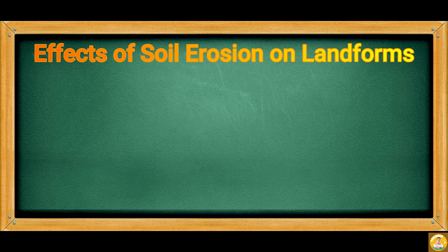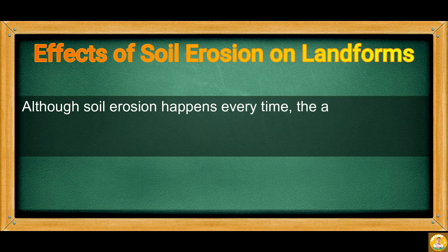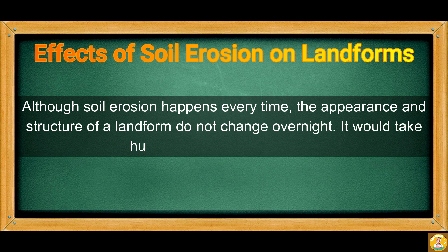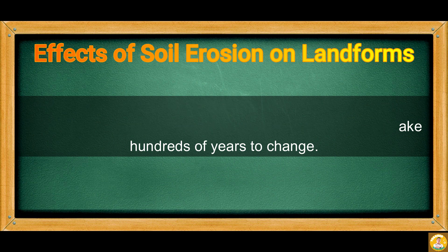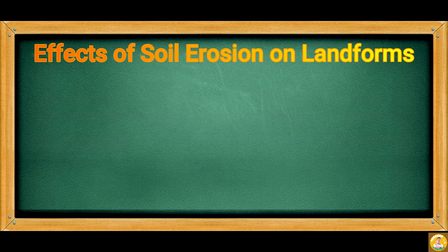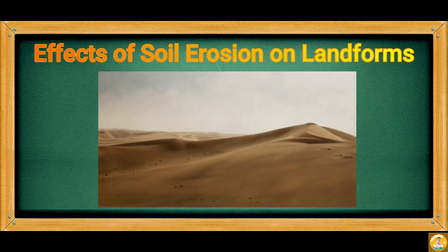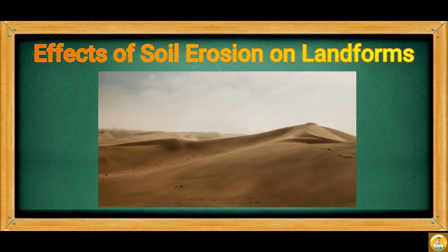Effects of soil erosion on landforms: although soil erosion happens continuously, the appearance and structure of a landform do not change overnight — it would take hundreds of years to change. For instance, sand dunes would form after plenty of soil accumulates to form a huge mass on top of existing large masses of rocks and soil. This process happens over and over again.